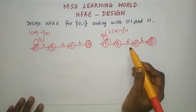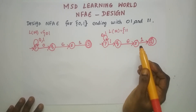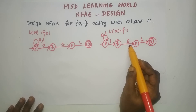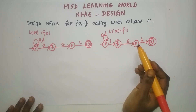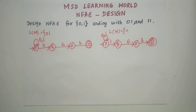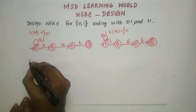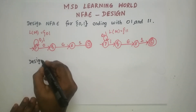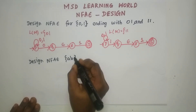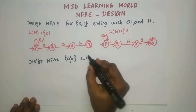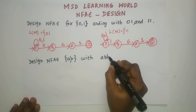Creating an NFA Epsilon is very simple — you just have to add one more Epsilon transition either in the middle of the input, at the beginning, or at the end. Now let us see another problem involving a substring. We will design NFA Epsilon for the set of all strings over {A, B} with A,B,B as a substring.